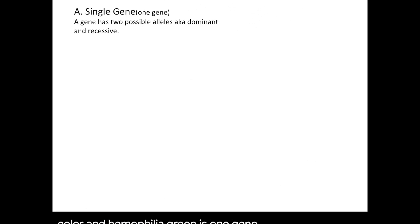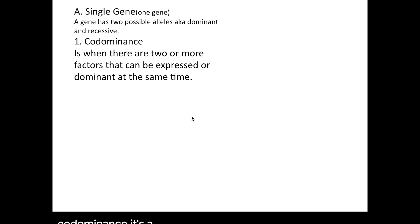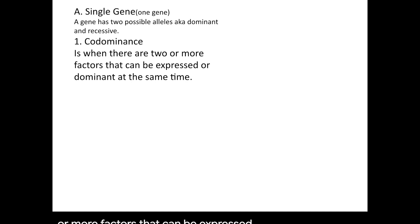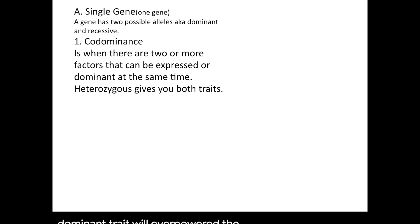A single gene is one gene with two possible alleles, such as dominant and recessive. For codominance, it's a little bit different. It's when there are two or more factors that can be expressed, or you could say dominant, at the same time. The heterozygous genotype will give you both traits. Typically in a Mendelian setup, the dominant trait will overpower the recessive trait.